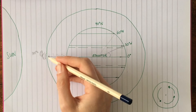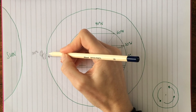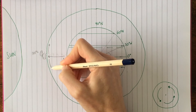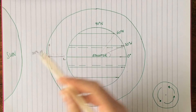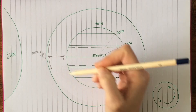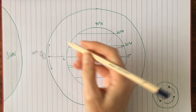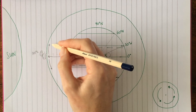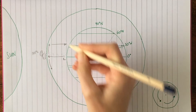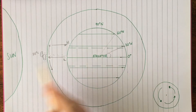The air has risen and hit the top of the atmosphere. It now has one of two options — it will either move north or move south. Focusing on the northern hemisphere: as the air moves north, it will start to cool because it has moved further from the equator. As it cools, it will sink back down towards the Earth's surface, creating high pressure. We end up with a band of high pressure here.